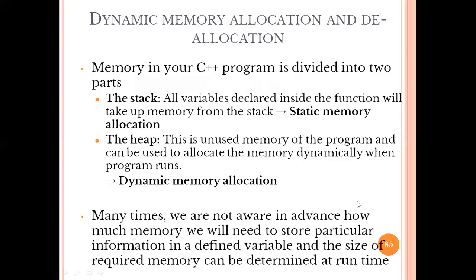What is dynamic memory allocation? In any programming language, if we are not sure about how much memory is required to execute that particular program — whether we require two bytes, four bytes, eight bytes, or ten bytes — in that case we use dynamic memory allocation. When we use dynamic memory allocation, the programming language stores that data on the heap. Heap is a kind of memory or storage available inside the computer, where dynamically generated data is stored.